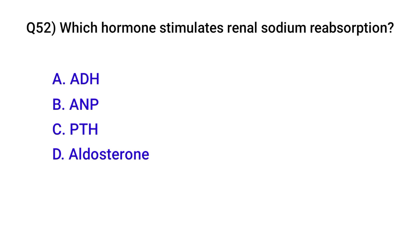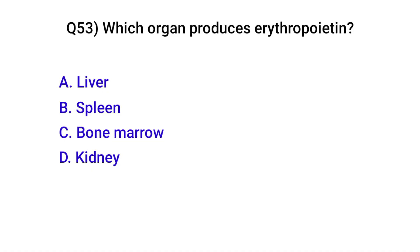Question number fifty-two: Which hormone stimulates renal sodium reabsorption? Correct option is D: Aldosterone. Question number fifty-three: Which organ produces erythropoietin? Correct option is D: Kidney.